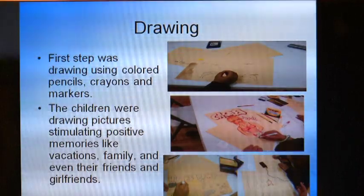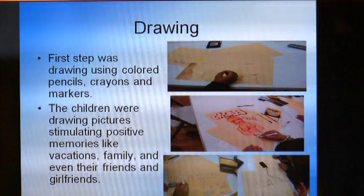The first art activity was drawing. The children used colored pencils, crayons, and markers to draw pictures stimulating positive memories like vacations, families, and their friends and girlfriends. One kid in the picture was a real artist — he grew up in Brooklyn, had a tough atmosphere, some family problems, and was picked up for marijuana use. But he really showed himself in his artwork: he drew a picture of his girlfriend because that's what stimulated him most and made him happy. So I said, go with it.